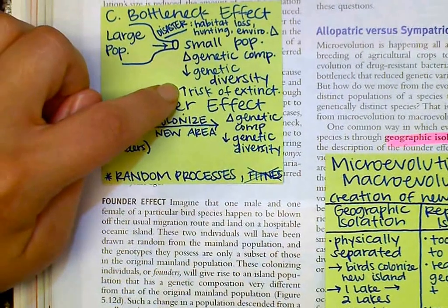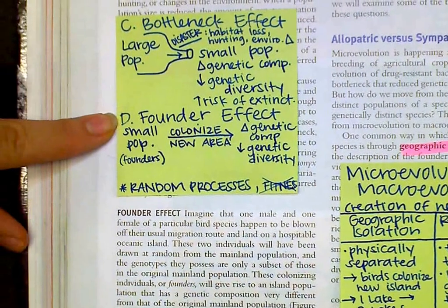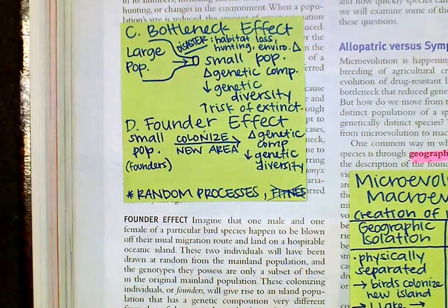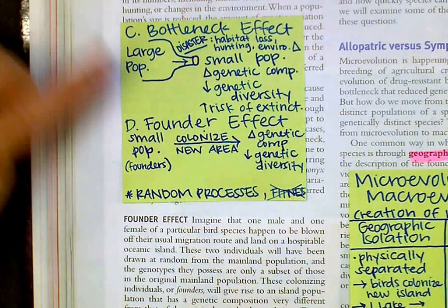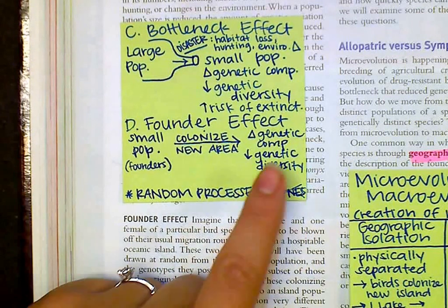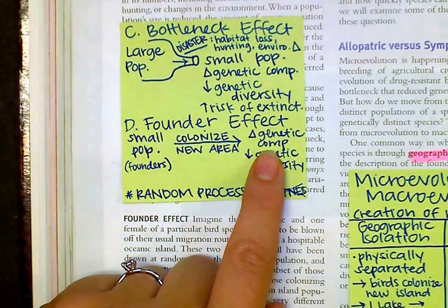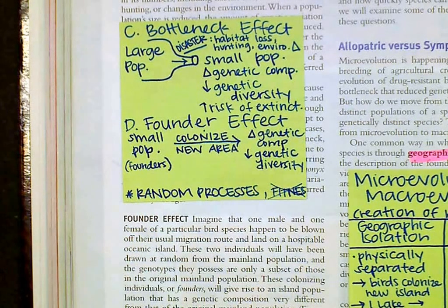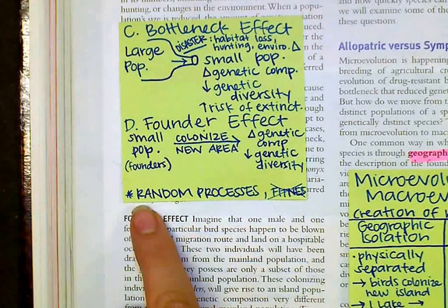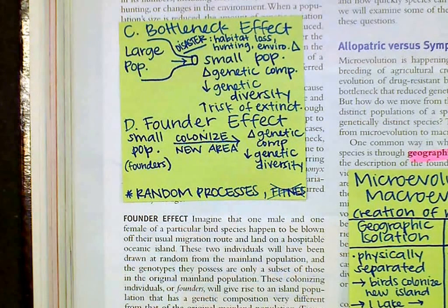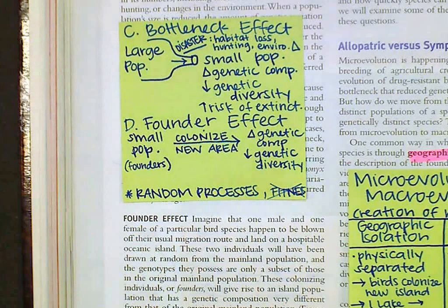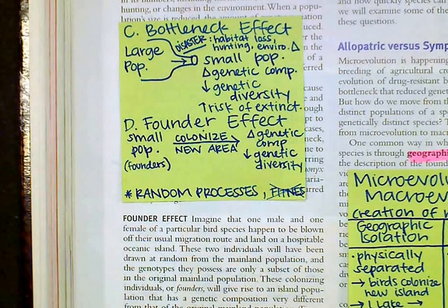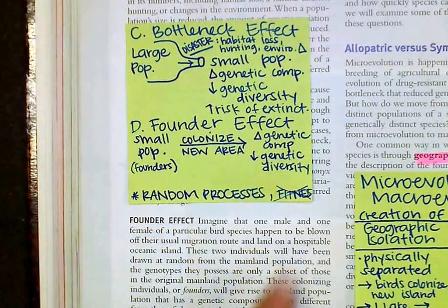And then we have the founder effect, which means a small population — also known as the founders, kind of like the Pilgrims at Plymouth Rock — colonize a new area. If they colonize a new area, there's usually a change in genetic composition from the original population, and there's usually a lower genetic diversity. In general, random processes actually decrease fitness — it's not based on fitness, it's based on chance and disasters, not on their abilities to survive and reproduce.